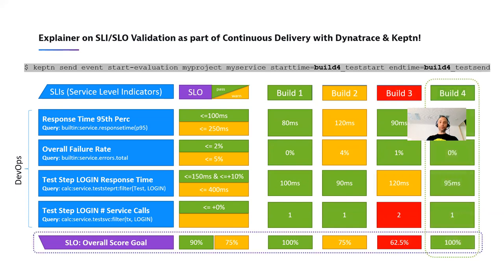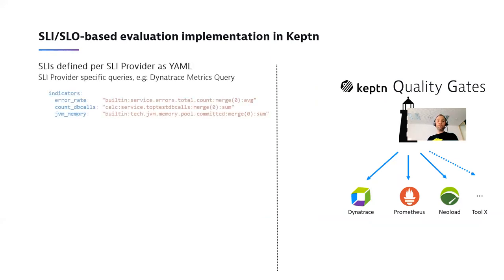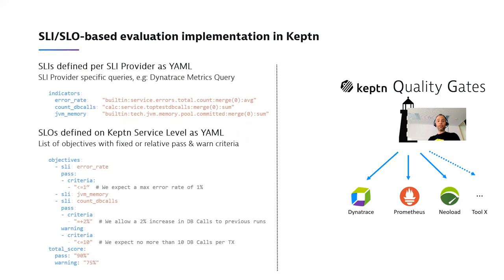If build number one comes along and everything is green, Keptn tells you you're good to go — 100 points. If build two comes along with slower response time and higher failure rate, you get penalized and score 75 — you decide if it's still good to go. If build three comes along and you've fixed the response time and failure rate but suddenly have an increase in backend login service calls from one to two — and your SLO definition says zero percent increase is allowed — you get penalized and your pipeline stops. You immediately get that feedback. Build four comes along, everything is green — good to go.